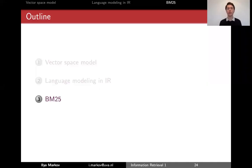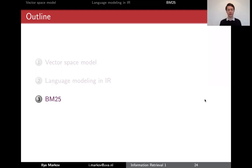The final topic in term-based retrieval is BM25. So far, we've seen two types of document representations: vector-based and distribution-based. BM25 is neither — it's just an empirically found method that works well for many collections. That's why you'll implement it in the assignments.